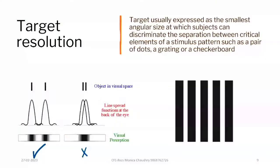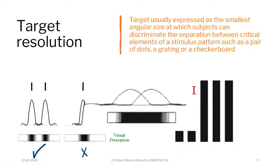Target resolution is expressed as the smallest angular size at which the subject can discriminate the separation between critical elements of a stimulus pattern — such as dots, gratings, or a checkerboard. The image must be formed and perceived at the retina level; if the minimum angle is not achieved, the eye cannot perceive the target.